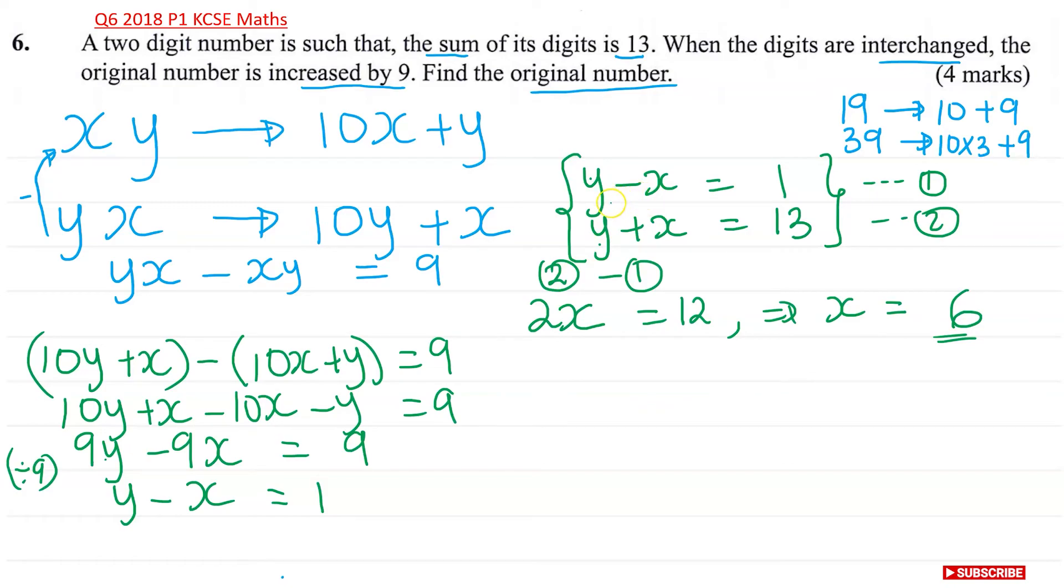So now I know my value of X. Now I can use one of the equation to get my Y. So I could say from equation 2, Y plus X is 6 is equal to 13. This means Y is going to be equal to 13 take away 6, which is 7.